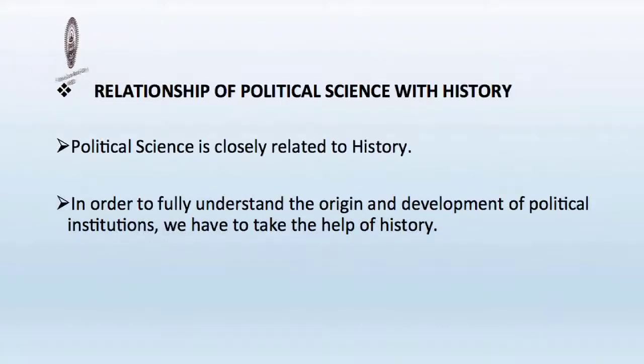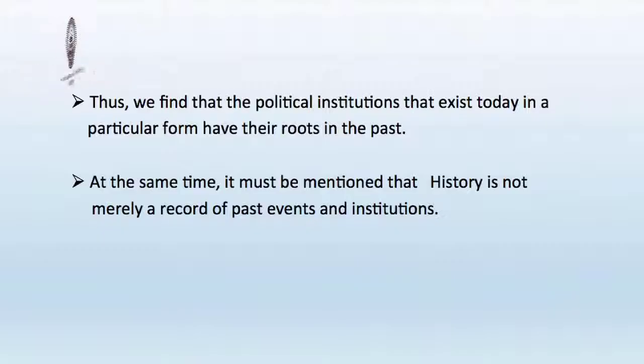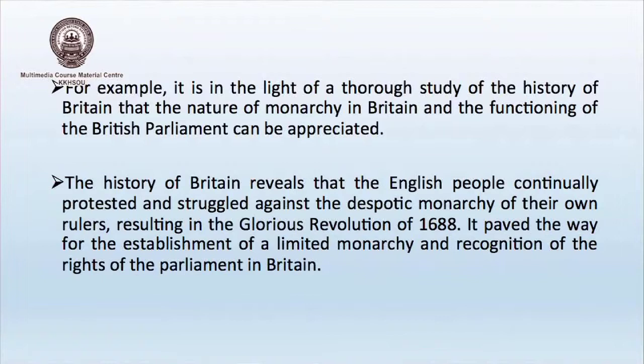Now we come to the relationship between political science and history. Political science is closely related to history. In order to fully understand the origin and development of political institutions, we have to take the help of history. The political institutions that exist today in a particular form have their roots in the past. History is not merely a record of past events and institutions. For example, the nature of monarchy in Britain and the functioning of the British Parliament can be appreciated only in the light of a thorough study of the history of Britain.